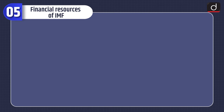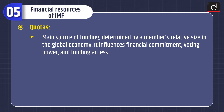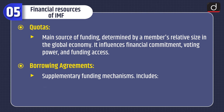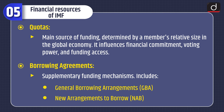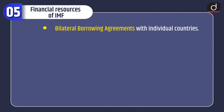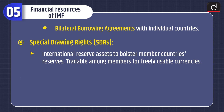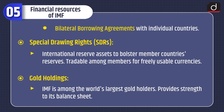Now let's understand about the financial resources of IMF. First is Quotas — the main source of funding, determined by a member's relative size in the global economy; it influences financial commitment, voting power, and funding access. Second is Borrowing Agreements — supplementary funding mechanisms including General Borrowing Arrangements, New Arrangements to Borrow, and Bilateral Borrowing Agreements with individual countries. Third is Special Drawing Rights, or SDRs — international reserve assets to bolster member countries' reserves, tradable among members for freely usable currencies. Gold Holdings: the IMF is among the world's largest gold holders, which provides strength to its balance sheet.